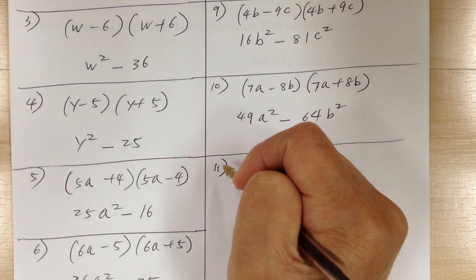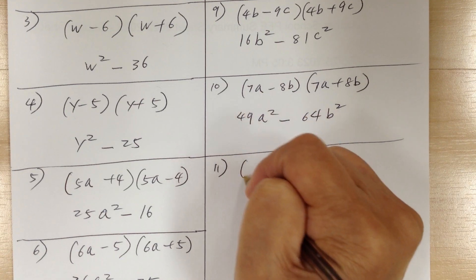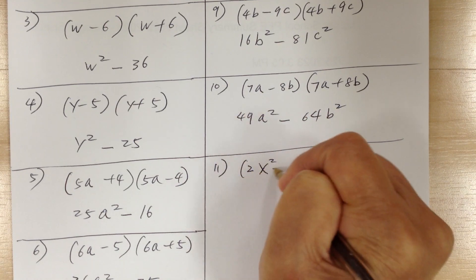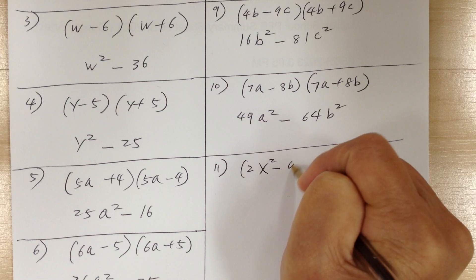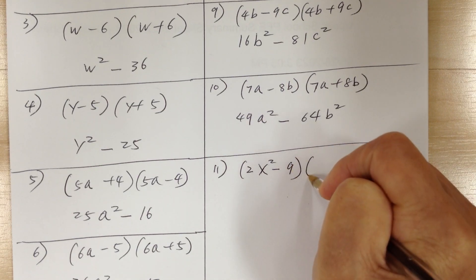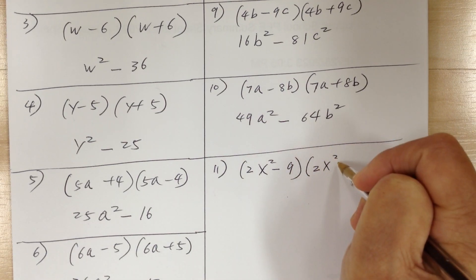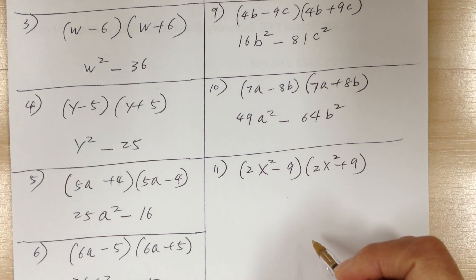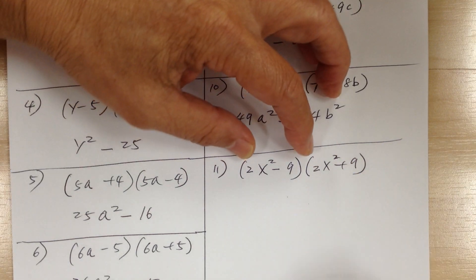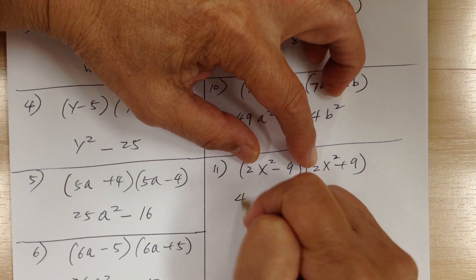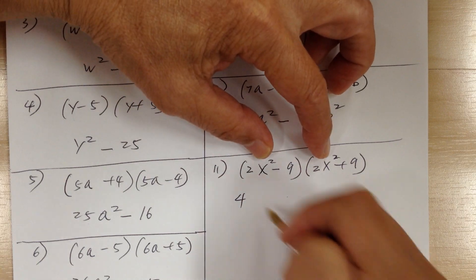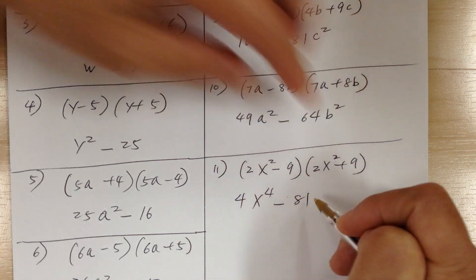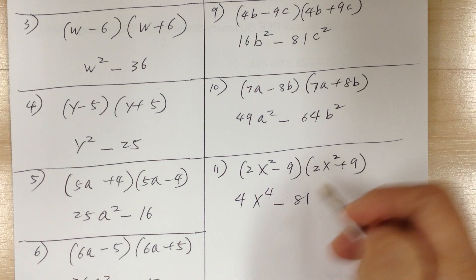Number 11: you have 2x squared minus 9 times 2x squared plus 9. When you multiply, you're going to get 4x to the 4th minus 81.